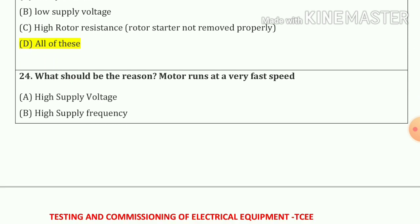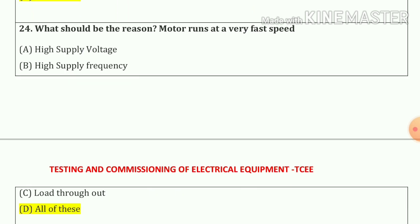Question number twenty-four: What should be the reason the motor runs at very fast speed? So our answer is all of these — that means A, B and C also.